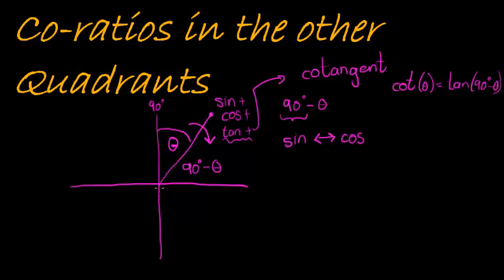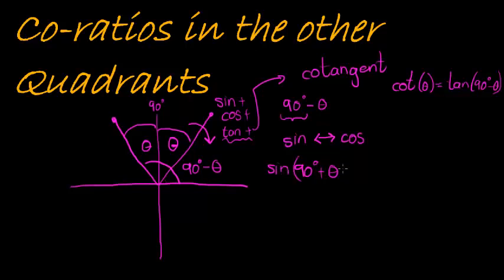In the second quadrant, if theta is the angle made with the y-axis, the observed angle is 90 degrees plus theta, which places us in the second quadrant. If I have sine of 90 degrees plus theta, my angle for sine is positive. I can change it to cos of theta without worrying about the sign, because in the second quadrant — remembering the CAST diagram — sine is positive, so I don't need to worry about the sign.